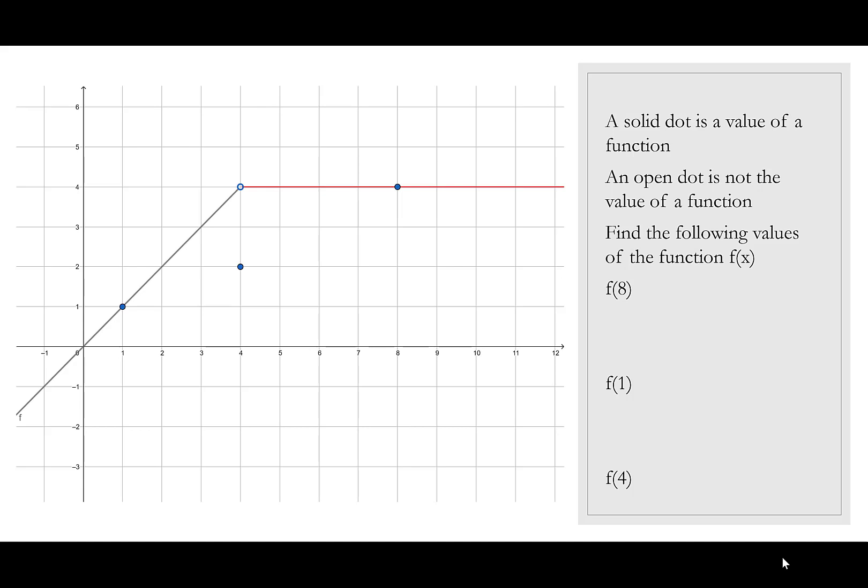We're going to start by just thinking about graphs and remembering what it means to have an open circle versus a closed circle. An open circle means that the point is not there — things might be on each side of it but it's not defined there. A closed circle says that value is included. We're going to use this graph of f of x and find these different function values.